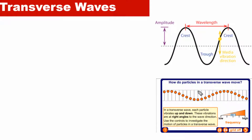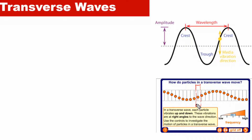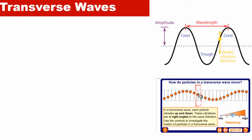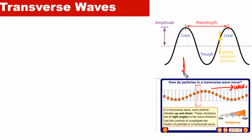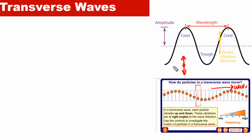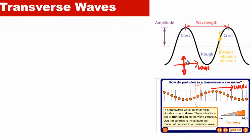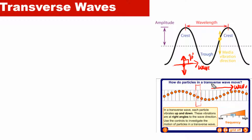First of all, let's try to understand what transverse waves are. The best way to understand transverse waves is by looking at the motion of one medium particle. If we focus on this medium particle, we can see that it is vibrating up and down, while the wave is moving to the right — meaning energy is traveling to the right. The angle between the oscillations and the wave direction is 90 degrees, and this type of wave is called a transverse wave.